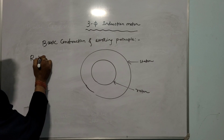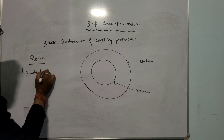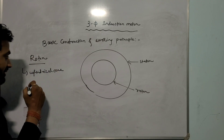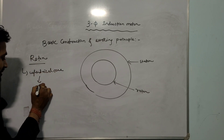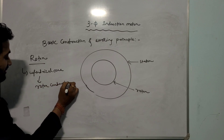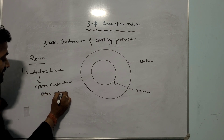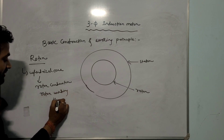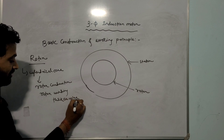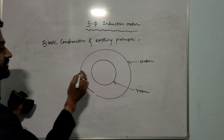The rotor is also a cylindrical core made up of silicon steel, but the rotor has rotor conductors — also called rotor winding. These rotor conductors are made up of thick copper wire or copper bars. That is the basic constructional feature.